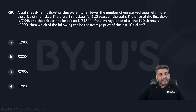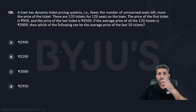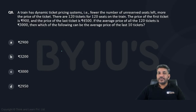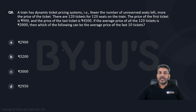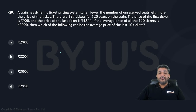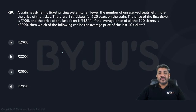Here comes question number 8. A train has a dynamic ticket pricing system — the fewer the number of unreserved seats left, the more the price of the ticket. There are 120 tickets for 120 seats on the train. The price of the first ticket is 900, the price of the last ticket is 4500, and the average price of all 120 is 3000. Which of the following can be the average price of the last 10 tickets?